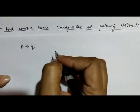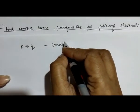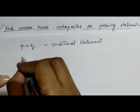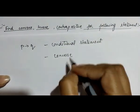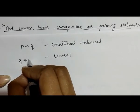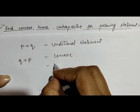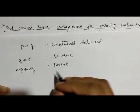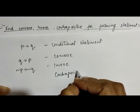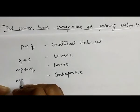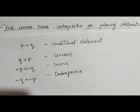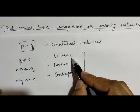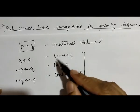As we know, if we have a conditional statement like 'if p then q', this is the conditional statement. The converse of this is 'if q then p'. The inverse is 'if not p then not q', and the contrapositive statement is 'if not q then not p'. These are the related statements derived from a given conditional statement.